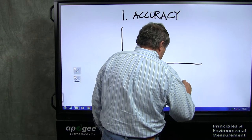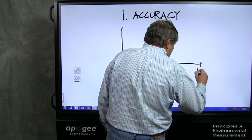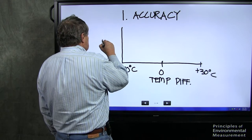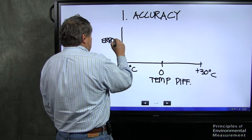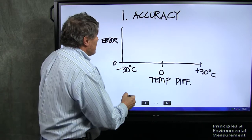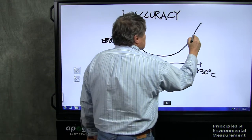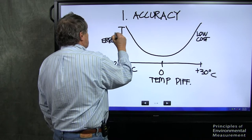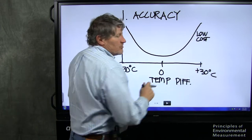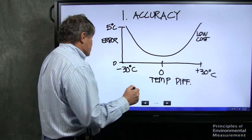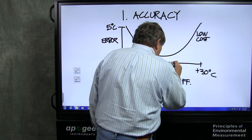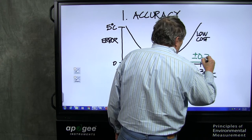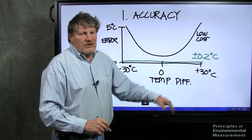So this is the temperature difference down here, temp diff. We're going to put plus 30 degrees C, and over here we're going to put minus 30 degrees C, and this is the error. So here's zero error. This is a low cost or hobby grade sensor. The error looks like that. These errors up here can be 5 degrees C as these temperatures reach the extremes. So how good is an Apogee sensor? The Apogee sensor comes in right along here. The accuracy specification for Apogee is plus or minus 0.2 degrees C, and that's over the entire temperature range.